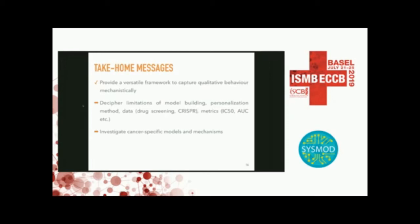Question: Does your model always converge to a single stable point, and does it depend on initial conditions? It depends a lot on your logical model and your update method — synchronous or asynchronous. You can reach stable states or cyclic attractors. It depends on how long you wait and how many trajectories you run. With these stochastic methods, you observe a kind of average across the different stable states reachable. Those stable states do depend on the initial condition, so we have to cover possible initial conditions in our stochastic trajectories. It is also possible to constrain initial conditions if some don't make sense biologically.